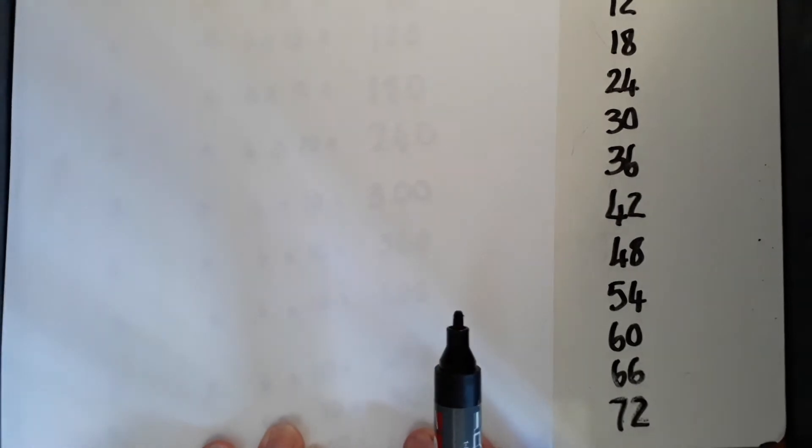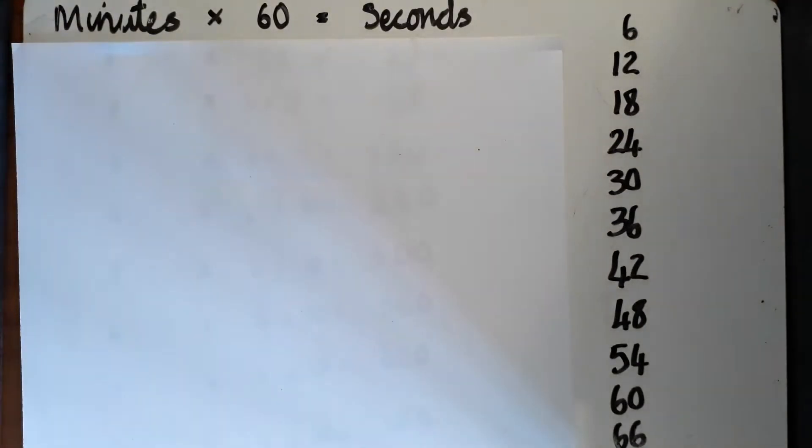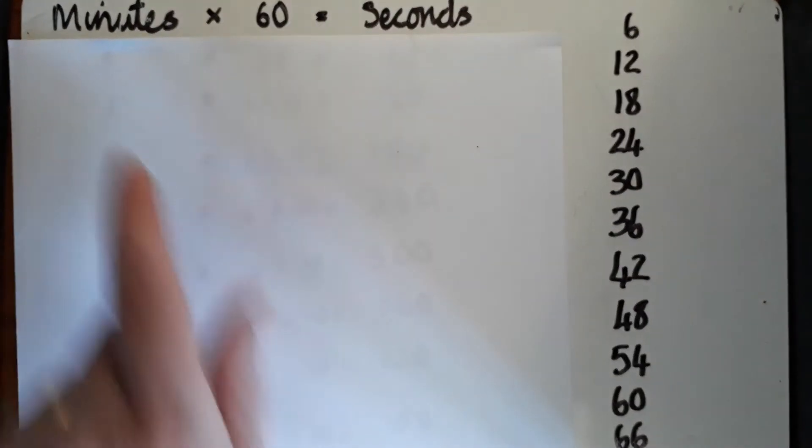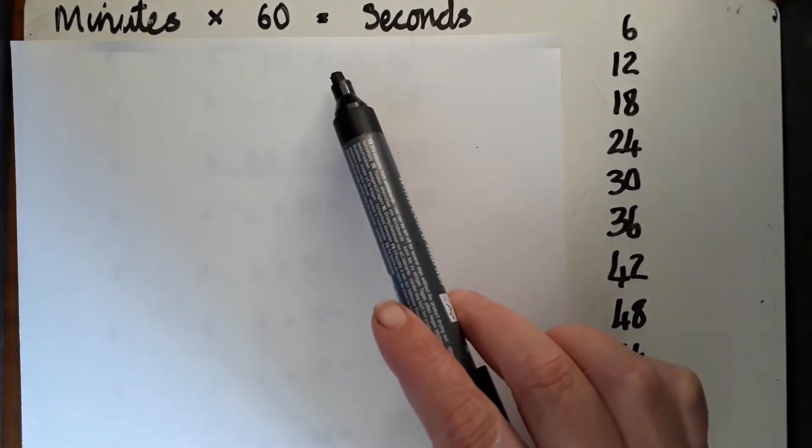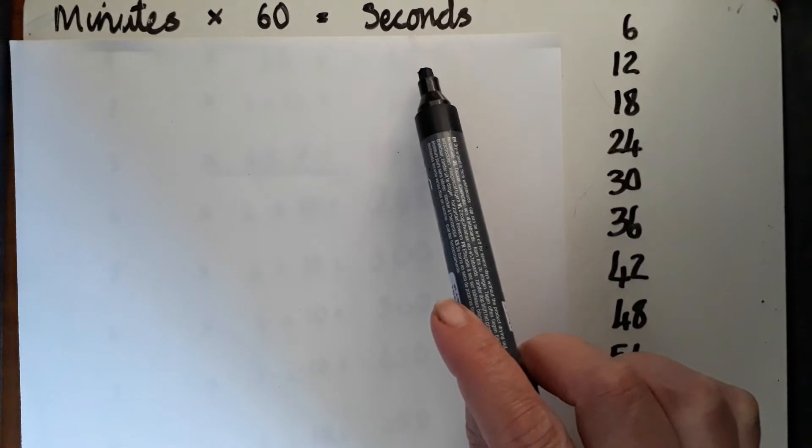We're going to use converting the number of minutes into seconds, and I'm going to show you how you use your multiples of six to help you do that. So I've written a splat box of the multiples of six, and we're going to use that to help us. If we take our number of minutes and multiply that by 60, that will give us the same number of seconds.